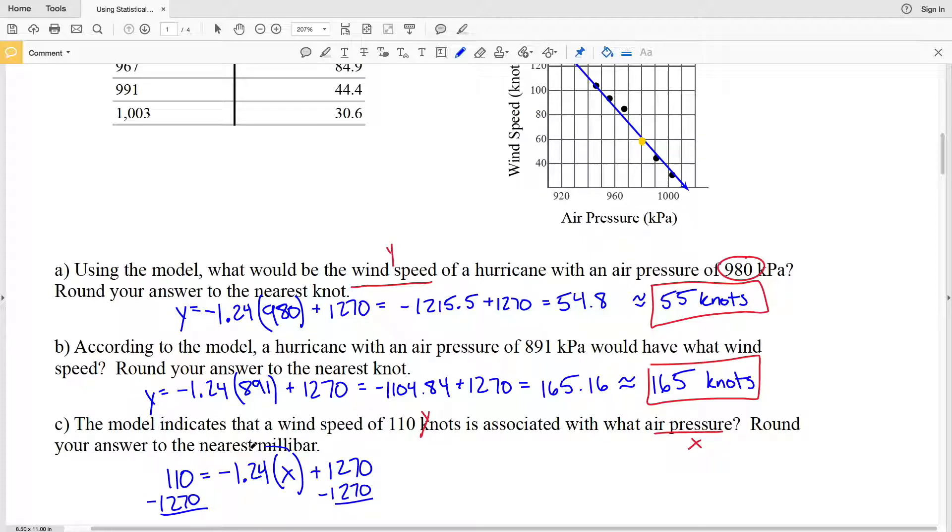110 minus 1270 equals negative 1160. So we'll get that negative 1160 is equal to negative 1.24 times X. Now all we need to do in order to isolate that X is divide by negative 1.24. Dividing 1160 by negative 1.24 will get 935.48.